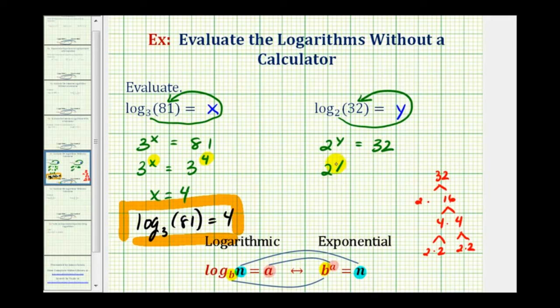So 2 to the power of y equals 2 to the 5th. And again these are equal, the bases are the same. So the exponents must be equal, and therefore y is equal to 5. Which means our logarithm is equal to 5. So we have log base 2 of 32 equals 5.